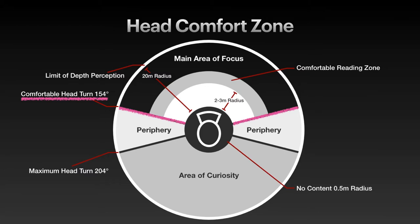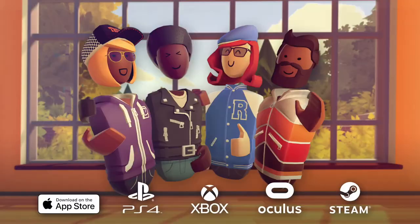An easy way to measure this is to hold your arms out straight and place your hands where they're still visible within your periphery. The maximum required head turn should be kept at or below 204 degrees horizontal, or where your arms are stretched out as far behind you as they can be to the sides, assuming you have normal range of physical motion. I'll walk you through some practical examples of this with Rec Room VR.